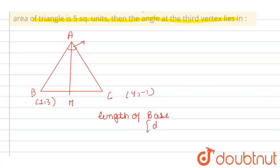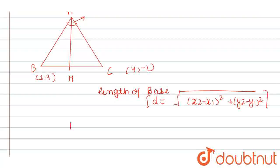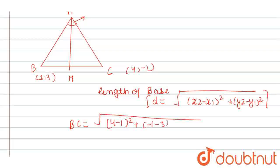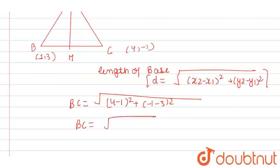Using the distance formula, d = √[(x₂ - x₁)² + (y₂ - y₁)²], we get BC = √[(4 - 1)² + (-1 - 3)²] = √[9 + 16] = √25 = 5.